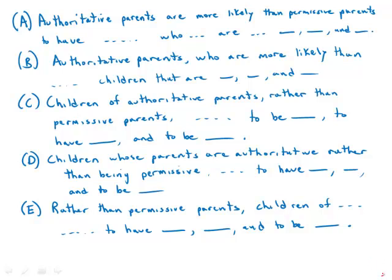So first let's look at the parallelism — the three things that the children become. In A we have adolescents who are self-confident, high in self-esteem, and responsibly independent. So adjective, adjective, and adjective. That's correct.